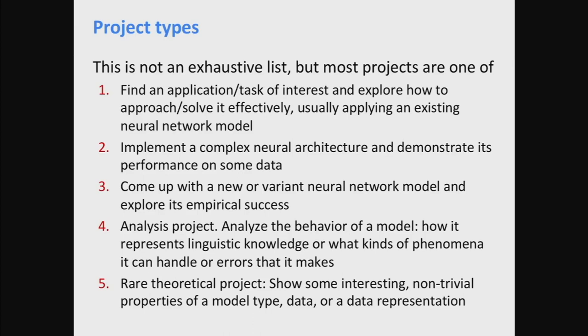In kinds of projects that people do for this class — this isn't quite an exhaustive list but is generally what people do — the first category, which I think is the bulk of projects, over half, is people find some task or application of interest and they build some neural network models to try to do it as effectively as possible. There's a second category where people concentrate on implementing — re-implementing some complex neural architecture and getting it to work on some data. It's certainly okay to start by re-implementing some existing model, and some people that's as far as they get. Whether that's okay largely depends on how complex your neural model is.